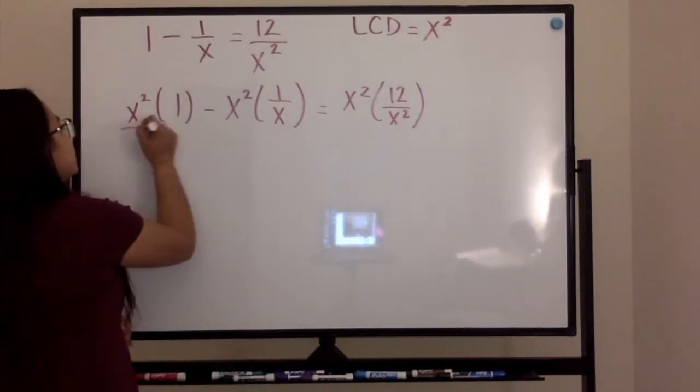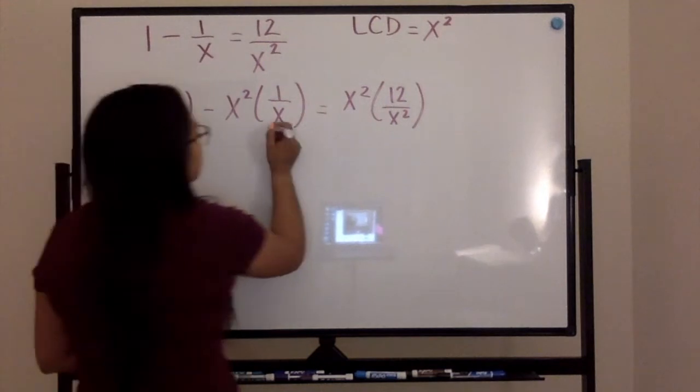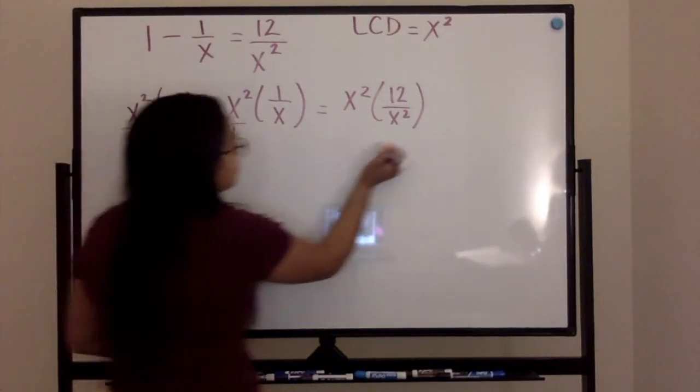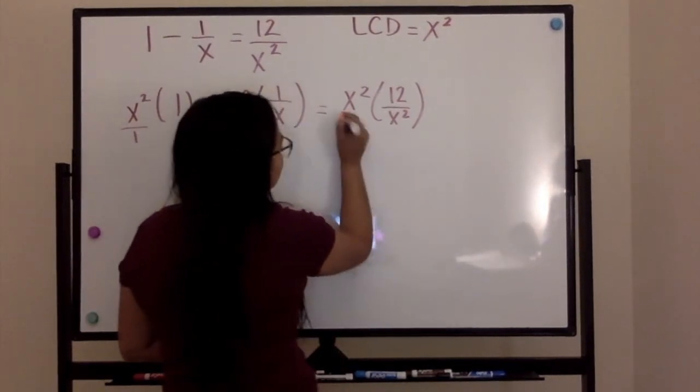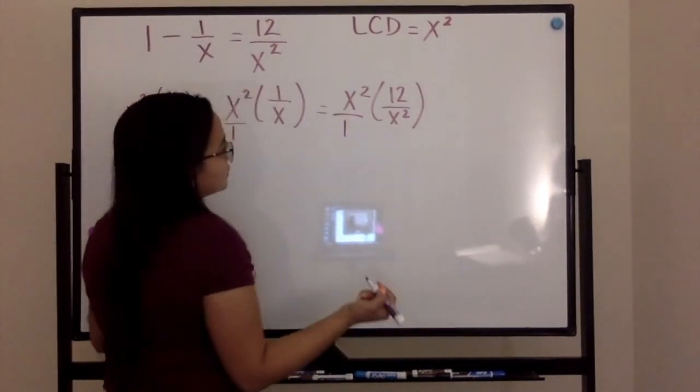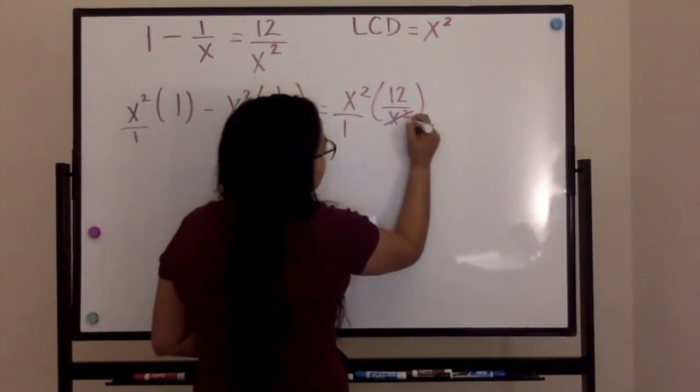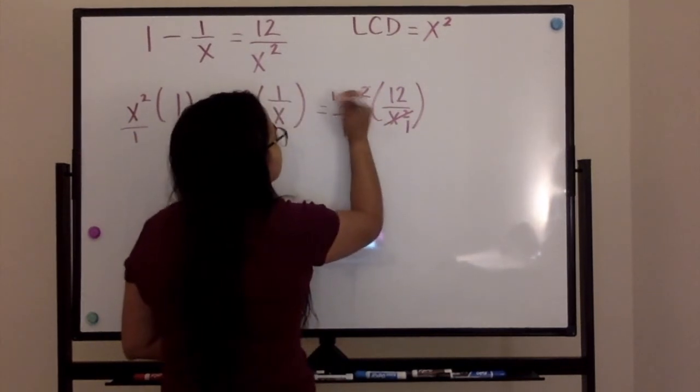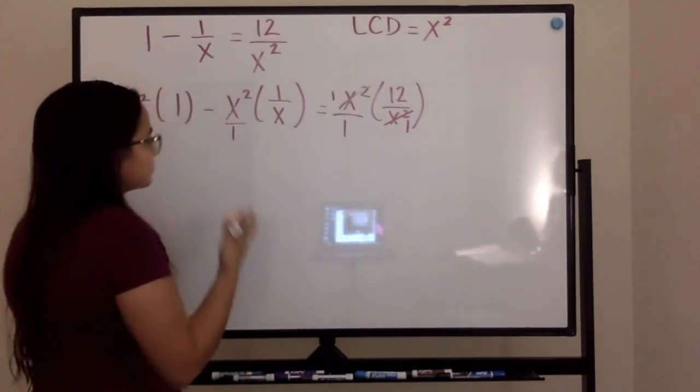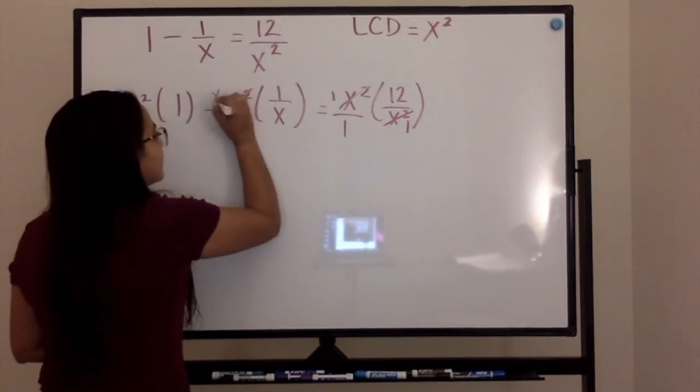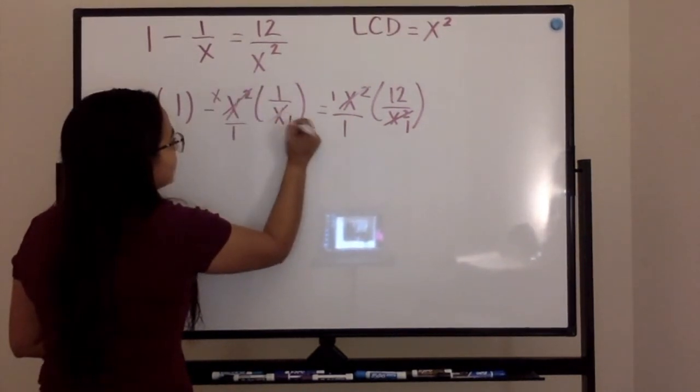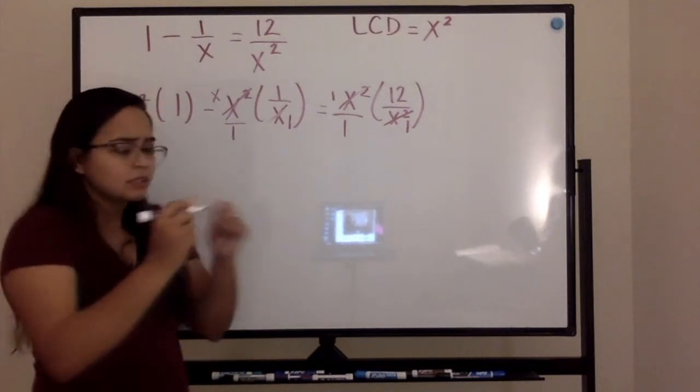Go ahead and use the distributive property. So this cancels out, one and one. Now this cancels out and we have an x left and a one. Now, very quickly.